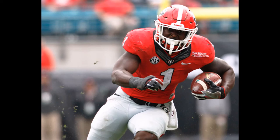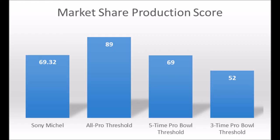Getting into Sonny Michel's data, he had a 69.32 out of 100 market share production score. Based on my data since 1969, he didn't really hit the all-pro threshold — the multiple all-pro threshold of 89 or higher — and that threshold is where the special running backs are. That's guys like Barry Sanders, Emmitt Smith, and Ezekiel Elliott. That's just like the ultra-rare sort of area of running backs, and Sonny Michel didn't quite produce like that.